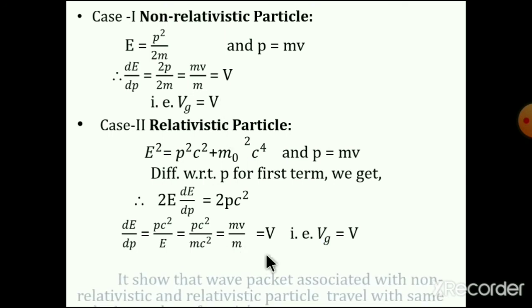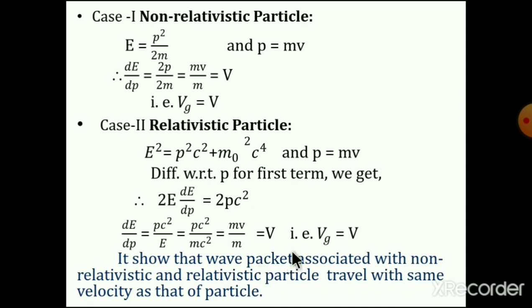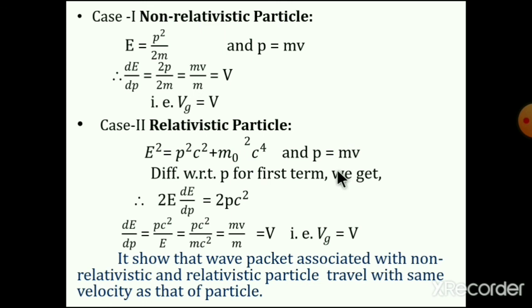For a relativistic particle moving with velocity equal to or greater than the velocity of light, the energy relation is E² = p²c² + m₀²c⁴ and p = mv. Differentiating the first term: 2E dE = 2p dp c², so dE/dp = pc²/E. Substituting E = mc²: dE/dp = mv/m = v. Therefore vg = v in both cases. This shows the wave packet associated with both non-relativistic and relativistic particles travels with the same velocity as that of the particle.